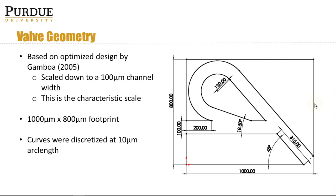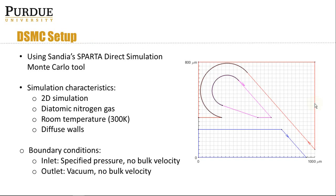Here's our valve. It's based on an optimized design by Gamboa for continuum flow, scaled down a little bit. The footprint is 1000 by 800 microns and the channel width is 100 microns, which I'm choosing as the characteristic scale — so that 100 microns is the characteristic length when Knudsen numbers are calculated. It describes curves at 10-micron arc lengths, with each of those points connected by straight line segments, so it's pretty smooth. I set that up in Sparta DSMC. It's a 2D simulation with diatomic nitrogen gas at room temperature and diffuse walls also operating at room temperature — very standard conditions.